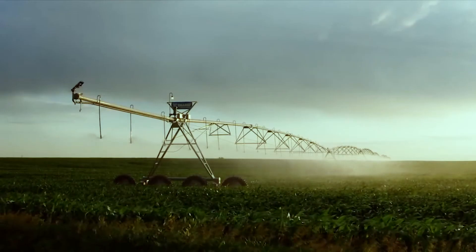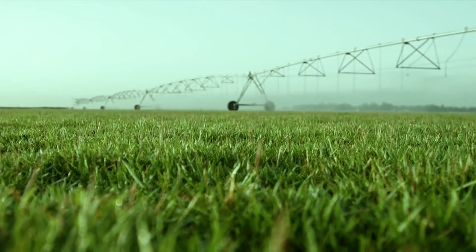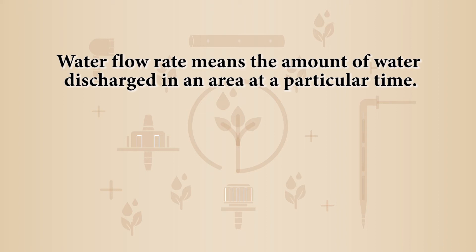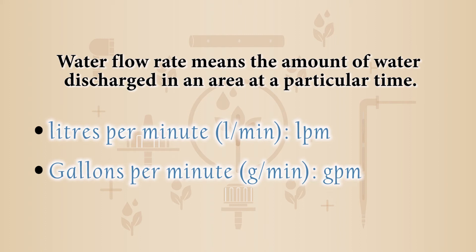Linear move sprinklers are similar to center pivot in construction, except that neither end of the lateral pipe is fixed. There are distinct differences in water flow rate, operating pressure requirements, and measurement of the wetted area between drip and sprinkler irrigation systems. Water flow rate refers to the amount of water discharged in an area at a particular time, expressed in liters per minute (LPM) or gallons per minute (GPM).